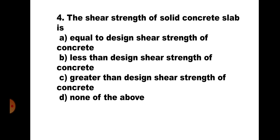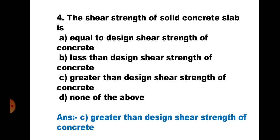Question 4. The shear strength of a solid concrete slab is: A. Equal to design shear strength of concrete, B. Less than design shear strength of concrete, C. Greater than design shear strength of concrete, and D. None of the above. Since the thickness of the slab is small, the design shear stress is K times Tau C, and for thickness less than 150 mm, K is 1.3. Hence, the strength is greater than design shear strength of concrete. The correct answer is C.